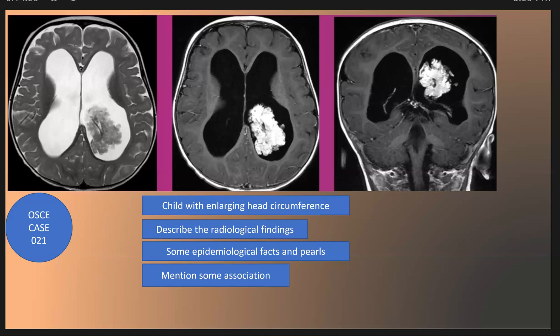As we said, regarding the location of the tumor: it occurs in about 70% in the fourth ventricle in adults. The next most common location is the trigone of the lateral ventricle, and it can also be seen in the third ventricle, the cerebellopontine angle, and in the region of the pineal gland.